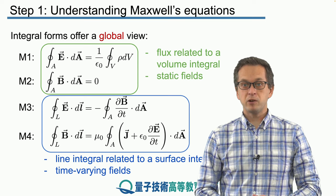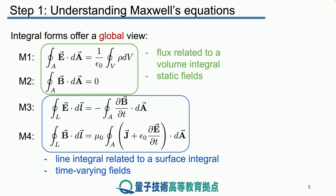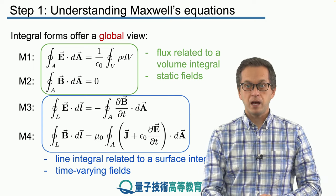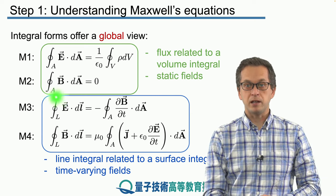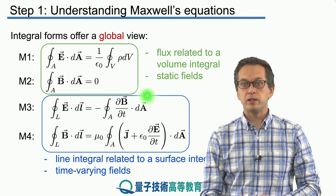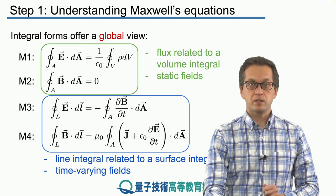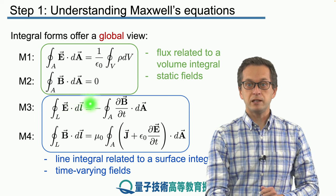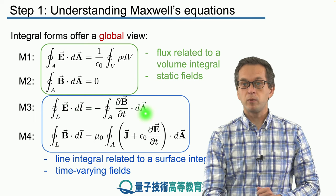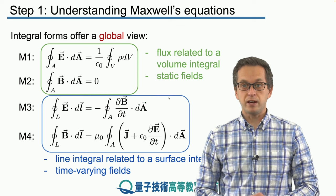In Maxwell's third and fourth equations, they tell us about time-varying fields — what happens when we introduce fields that are changing in time. We are always looking at a line integral on the left of the magnetic field and the electric field, and somehow that's related to the time change of the other field. So the line integral of the electric field is always related to the time change of the magnetic field, and vice versa.